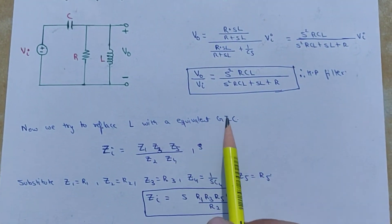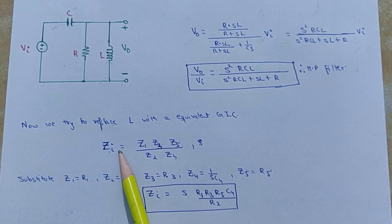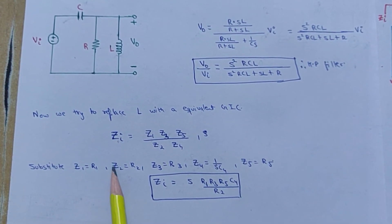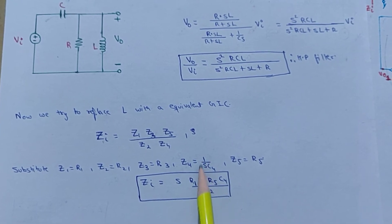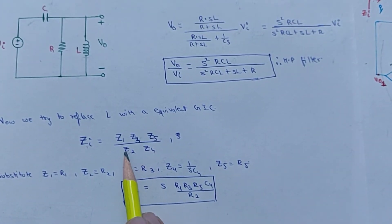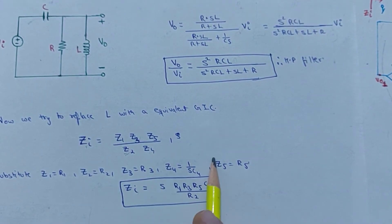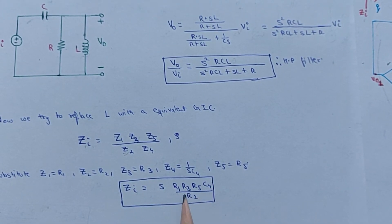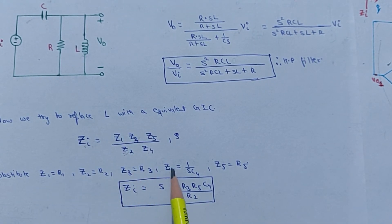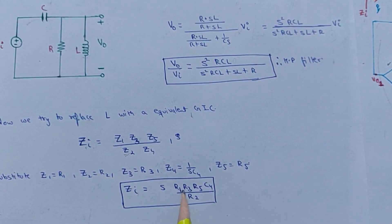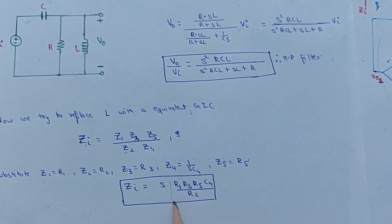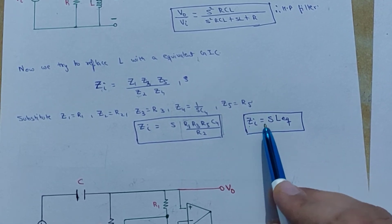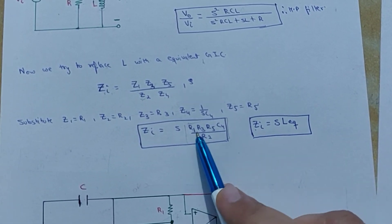Now we try to replace L with an equivalent GIC. The input impedance of the GIC is Zi = Z1·Z3·Z5 / (Z2·Z4). Substituting Z1 = R1, Z2 = R2, Z3 = R3, Z4 = 1/(SC4) — meaning Z4 is replaced by a capacitor — and Z5 = R5 (a resistor), Zi becomes S·(R1·R3·R5·C4) / R2. So if we put these impedance values into the standard GIC configuration, we obtain an equivalent inductor with L_eq = R1·R3·R5·C4 / R2.